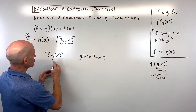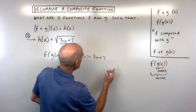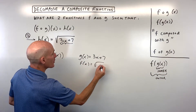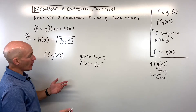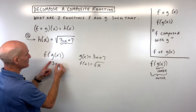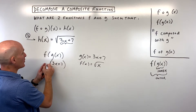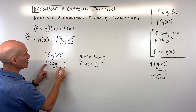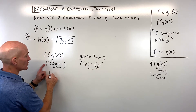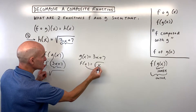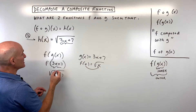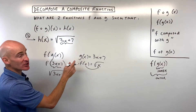The outer function f of x is equal to the square root of x. We can check our work: g of x equals 3x plus 7 goes into our f function in place of x, giving us the square root of 3x plus 7, and we're getting back our h of x function.